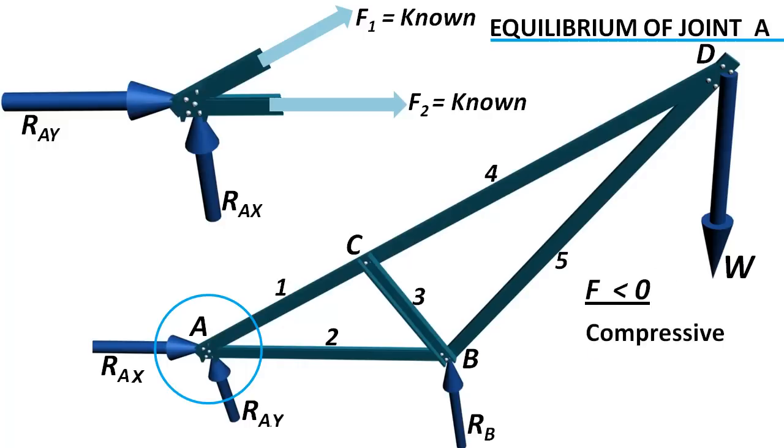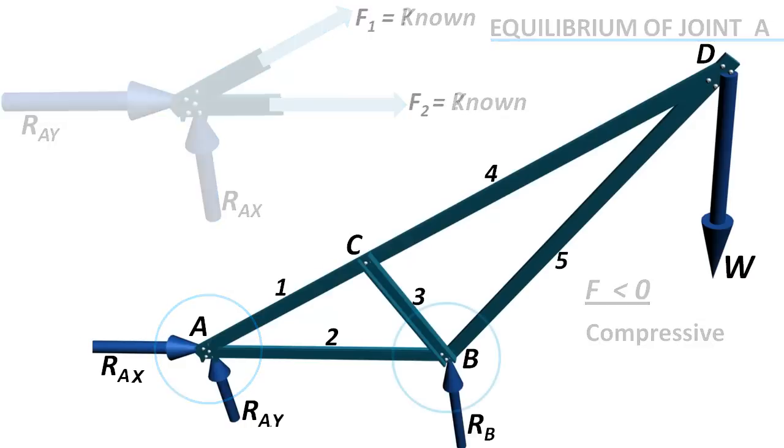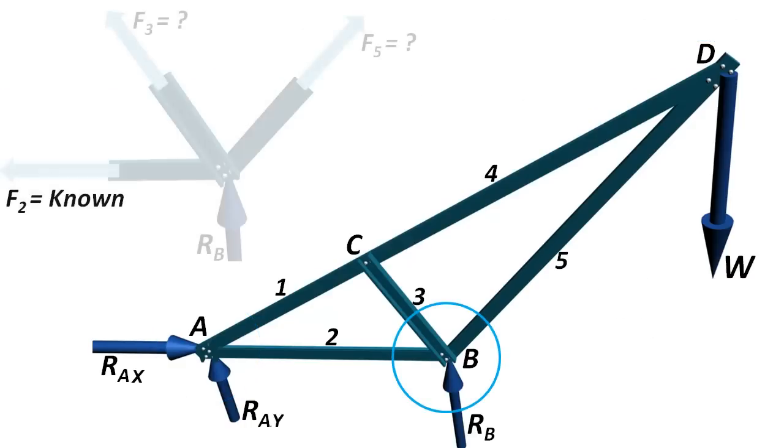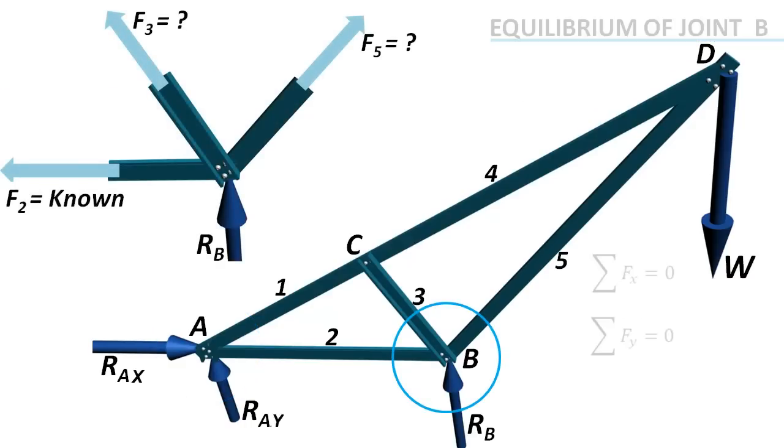Now we can move to point B. There, number of unknowns are two now. Using the same concept, we can solve for forces in members three and five.